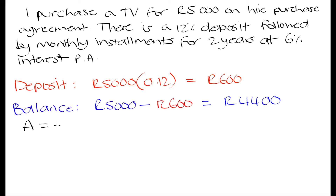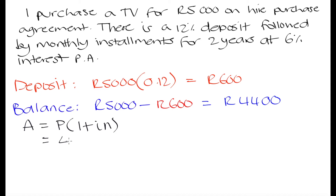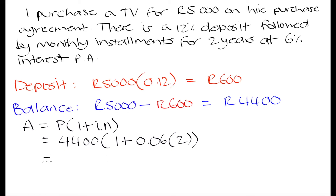We use the simple interest formula: the accumulated amount equals the principal multiplied by 1 plus the interest rate as a decimal, times the number of years. The amount we have to pay back in total over two years is based on our principal of R4,400 — the amount we owe after paying the R600 deposit. So it's 4,400 multiplied by 1 plus 0.06, multiplied by 2 years. If you plug this into your calculator, you get R4,928.